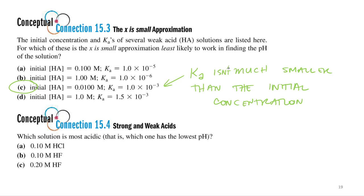Alright, so which solution is the most acidic? That is, which one has the lowest pH? So we got 0.1 molar HCl solution, 0.1 molar HF solution, or 0.2 molar HF solution. I'll give you a few seconds to think about it. To connect with the concepts.